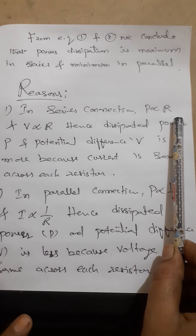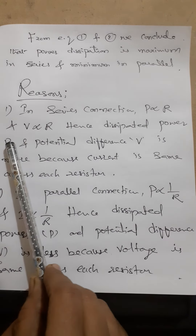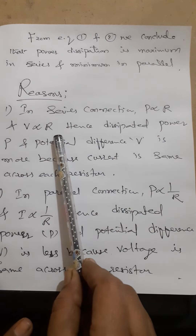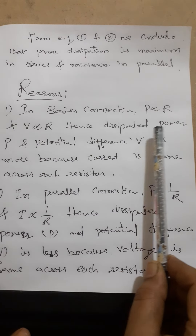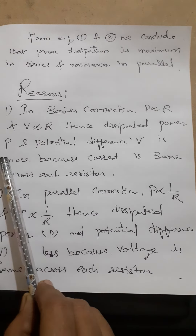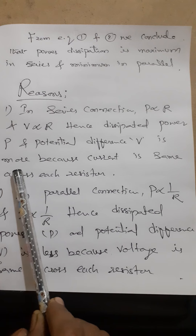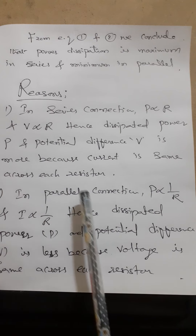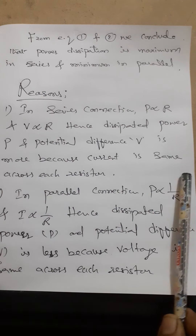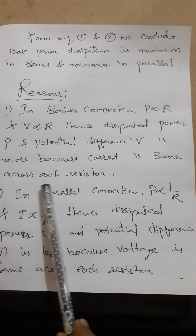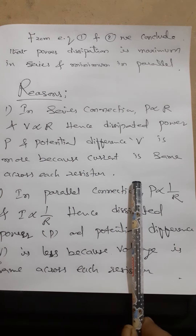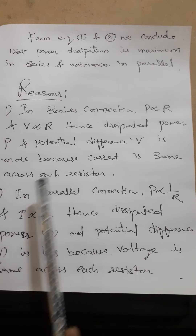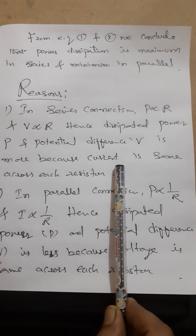What is the reason? In a series connection, power is proportional to the resistance, and voltage is also proportional to the resistance. The dissipated power and potential difference are more because the current is the same across each resistor. This is the reason for the maximum dissipated power in series.